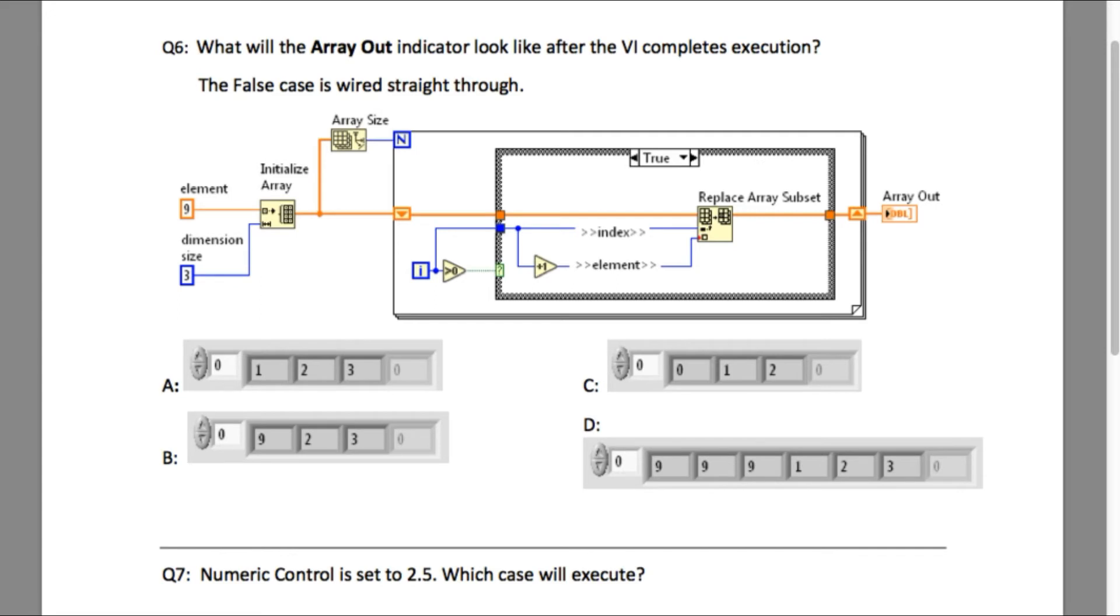Now the true case structure, which is going to replace the array element subset, will only execute if I is greater than zero. Since the indexing starts from zero, that means the false case will execute for the first iteration, and then the increment value of the iterative value will replace the element for the second and third iteration.